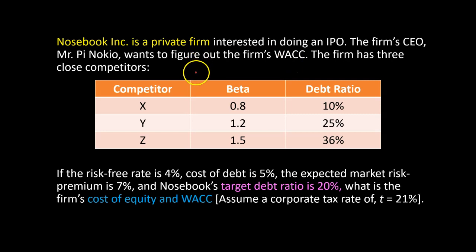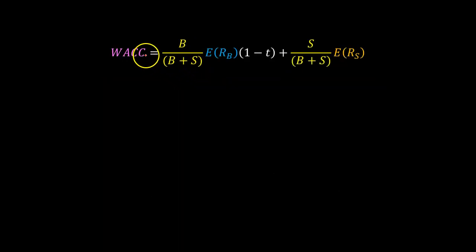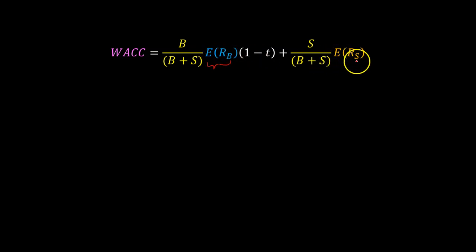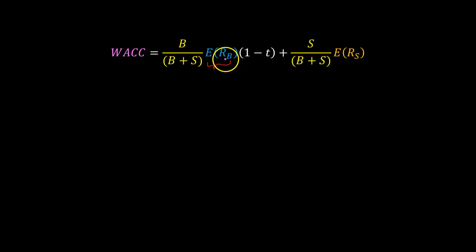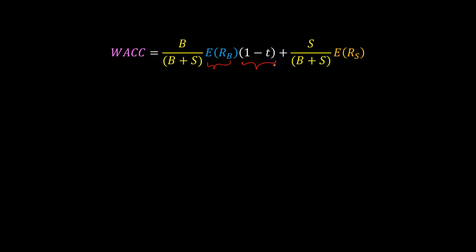Before we go any further, recall that the formula for weighted average cost of capital is a weighted average of the firm's cost of debt — the expected return on debt — and cost of equity — the expected return on equity — where the weights are the firm's debt ratio and equity ratio in market value terms. The cost of debt is multiplied by one minus the tax rate.